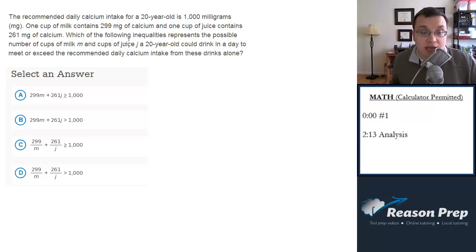Looking at the choices, we have to set up an inequality and we're given a couple of variables. One is the cups of milk which is M, the other is the cups of juice which is J, and we need to put together some sort of inequality that will show, given a number of cups of milk and juice that this 20-year-old drinks,